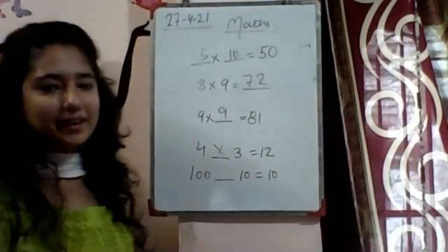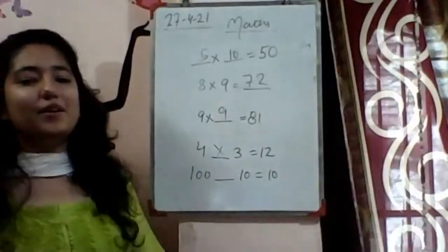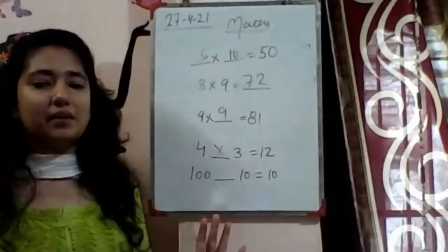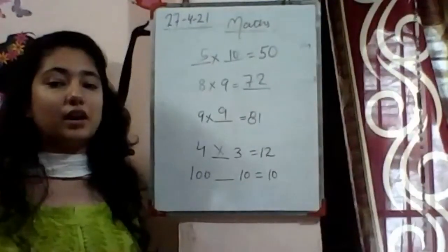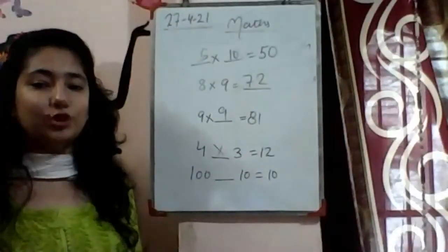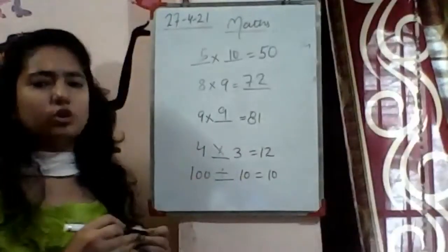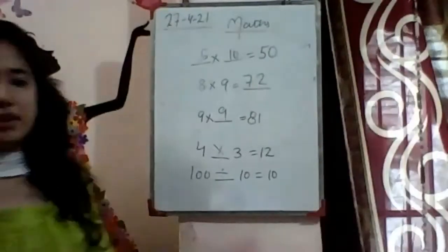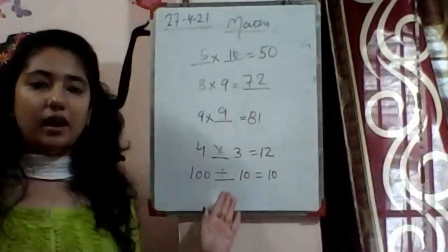This is a little difficult — let's see if it comes or not. Wrong — everyone is wrong. It's not multiply, it's divide. 100 divided by 10 equals 10. This was a little difficult for you but no problem — mental math, we need to think. We divided 100 by 10 and we got 10.